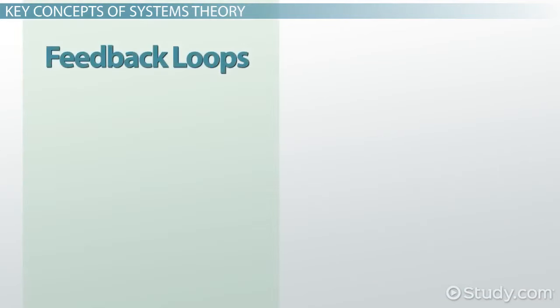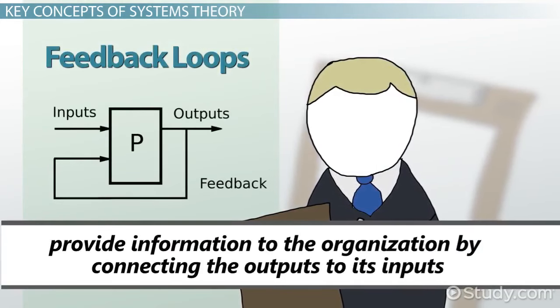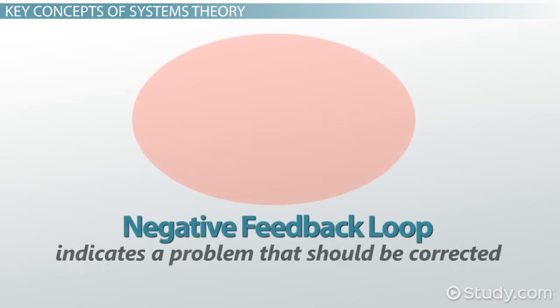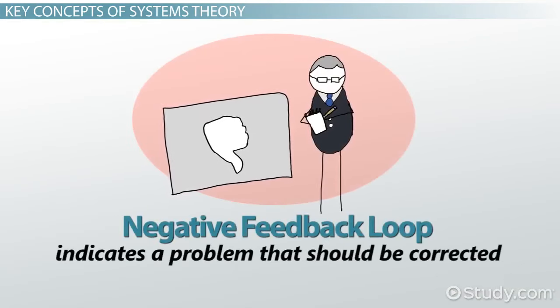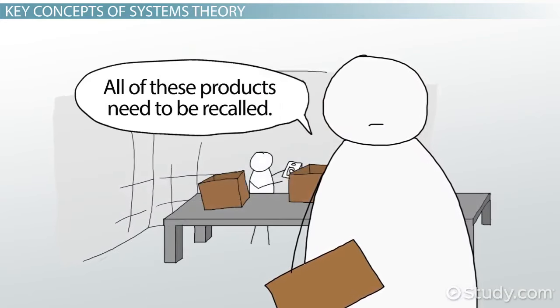Feedback loops are also an important feature of open systems. They provide information to the organization by connecting the outputs to the inputs. A negative feedback loop indicates a problem that should be corrected, for example, the failure of a product design indicated by the need to recall the product.